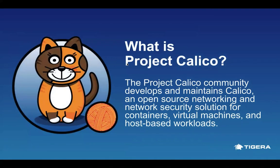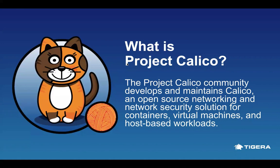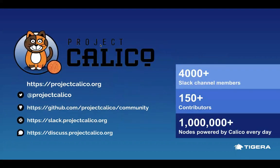Most of you are probably familiar with Project Calico, but if it's your first time hearing about it, I'll tell you a little bit. Project Calico is a community that develops and maintains Calico — an open source networking and network security solution for Kubernetes. It provides connectivity, network security, observability, and troubleshooting traceability for container workloads on Kubernetes, virtual machines, and bare metal nodes or VMs outside of Kubernetes clusters. We have well over 150 developers who've contributed to Project Calico. You can find us at github.com/projectcalico.